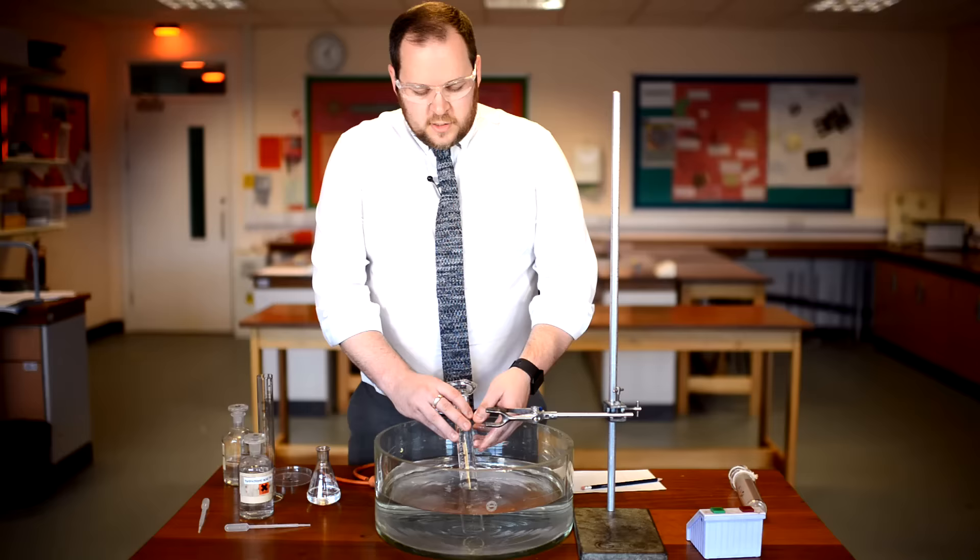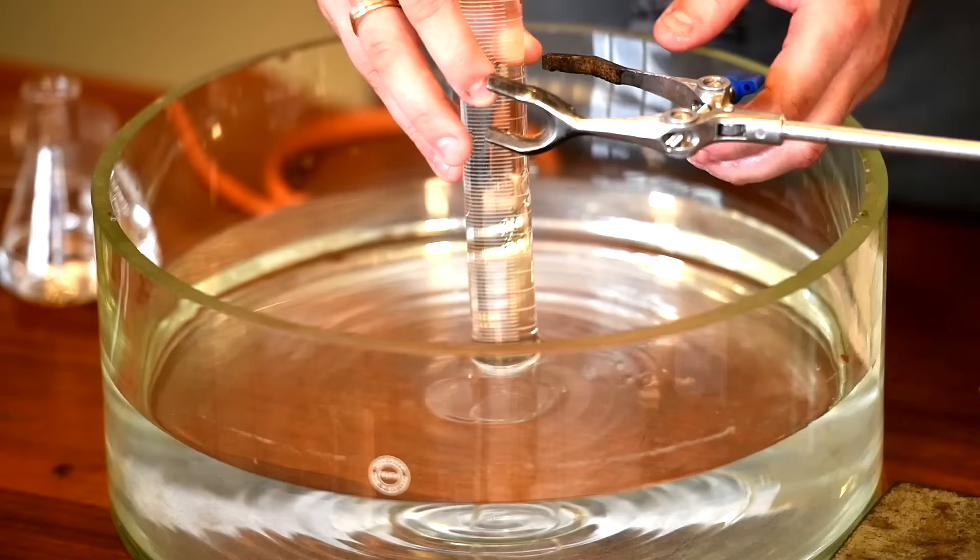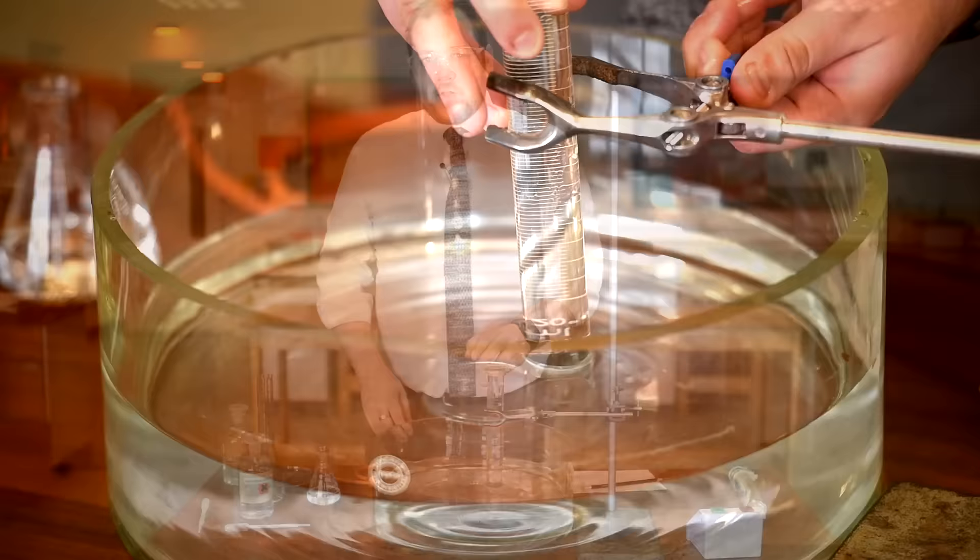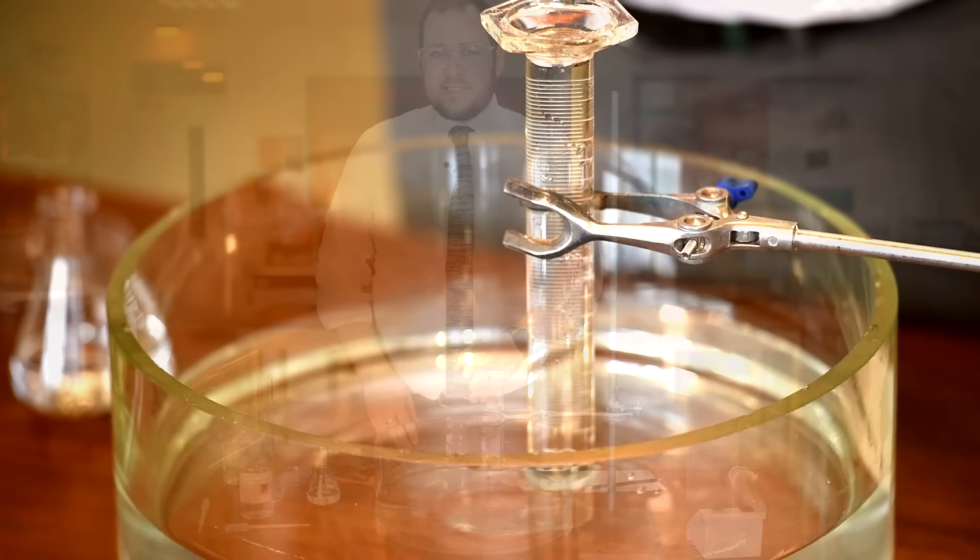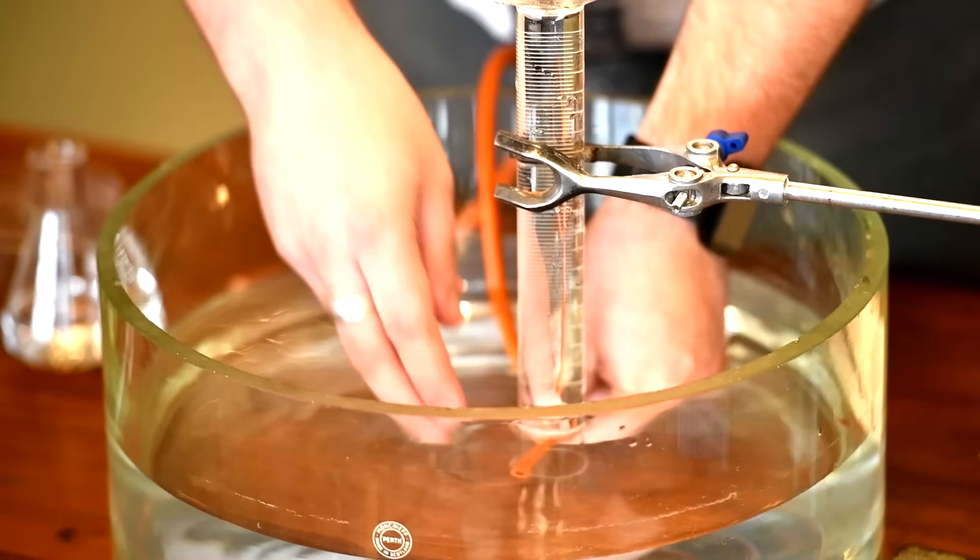You then need to clamp the measuring cylinder in place about one centimetre off the bottom of the trough. Make sure that you can see the scale on the measuring cylinder because you're going to need to record the gas being produced every 10 seconds. Put the delivery tube into the bottom of the measuring cylinder, like so.